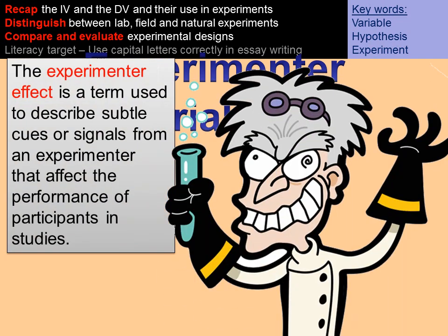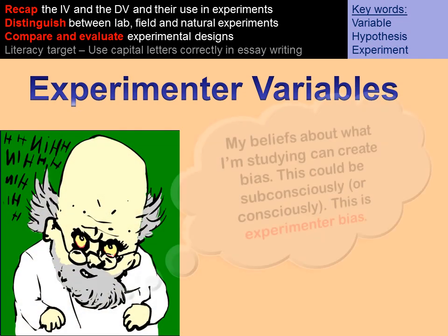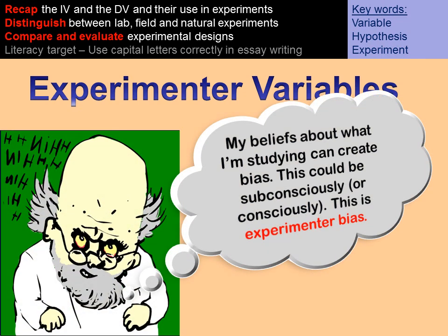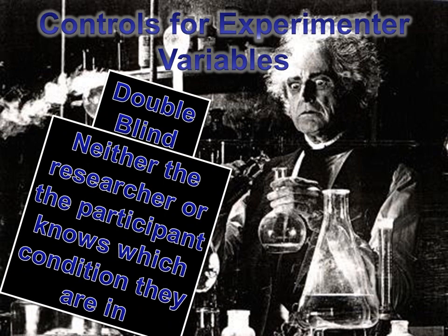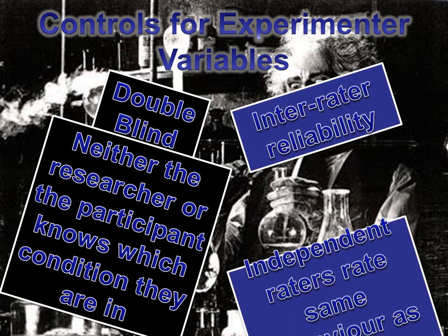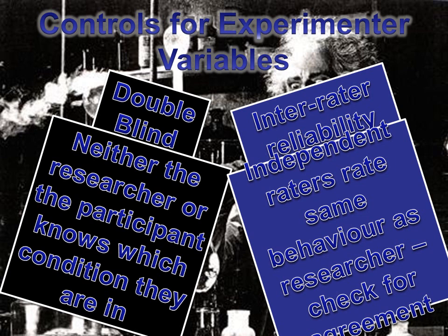The experimenter effect refers to a situation where the experimenter has influenced the results — this might be by giving a cue or signal to participants, potentially by accident. Experimenter variables need to be controlled because the experimenter's pre-existing opinion or something they're trying to prove may have subconsciously affected the results. To control these you could use a double blind design where neither the researcher nor the participant knows which condition they're in, meaning they don't know what results they want to obtain from that condition. Alternatively, you could use inter-rater reliability where more than one researcher interprets the results, ensuring they can check their opinions with each other and agree on the results.